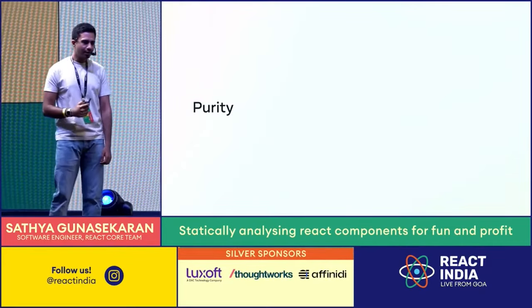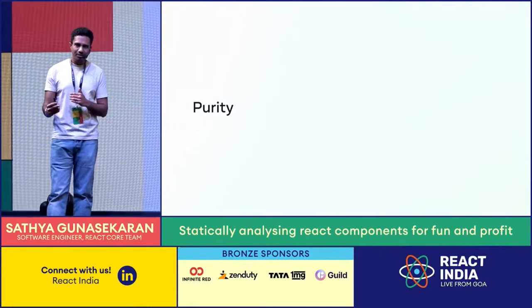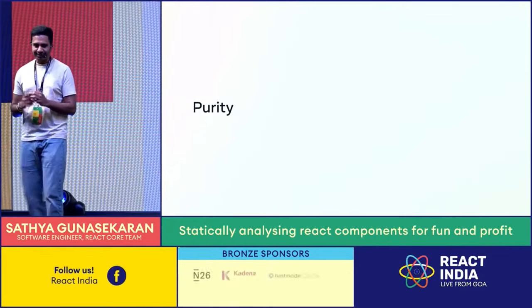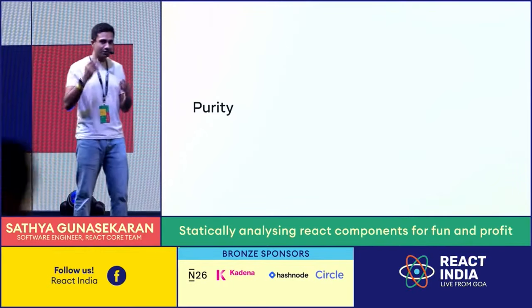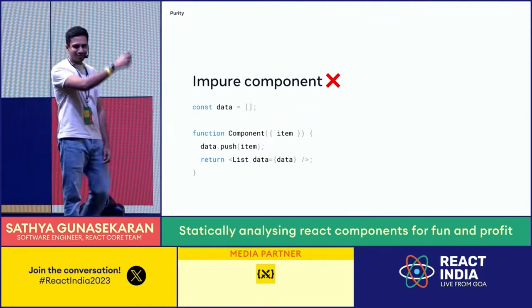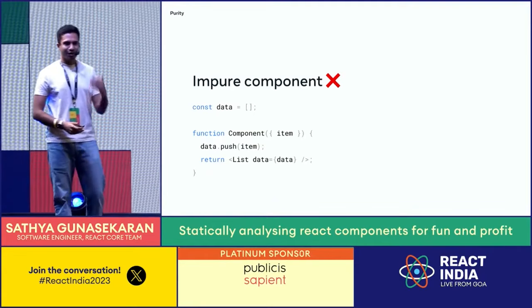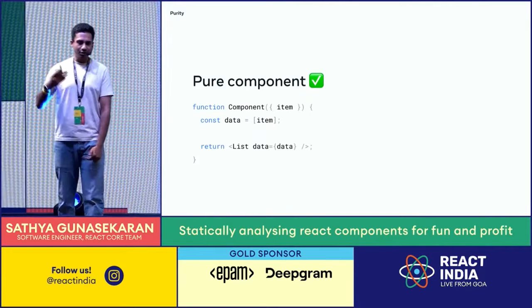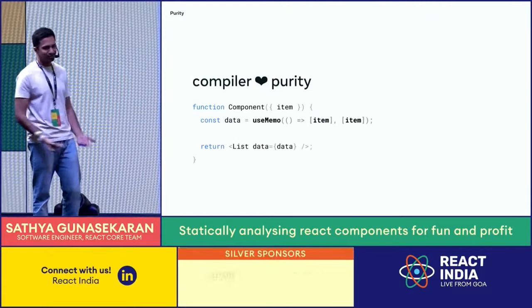Purity is another big part of our programming model. Components being pure in React means they should always render the same output given the same input and state. When your components are pure, testing and debugging is super easy because your components become predictable — and predictable is good. Consider an impure component that modifies global data — this isn't ideal because it's the same global array being modified on every render. The better way is to declare and use the array locally within the component. This lets the compiler memoize the data for you.